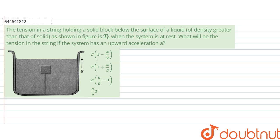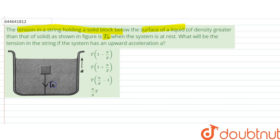Hello, we are given another question and the question says the tension in the string holding a solid block below the surface of a liquid, as shown in the figure, is T0. So here it is T0, and there would be a force mg here, and there would be an upthrust force, let's say that is F, when the system is at rest.